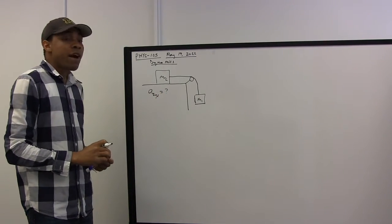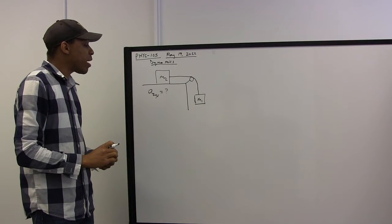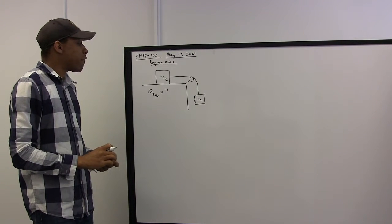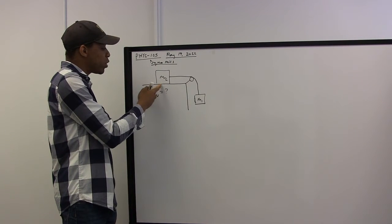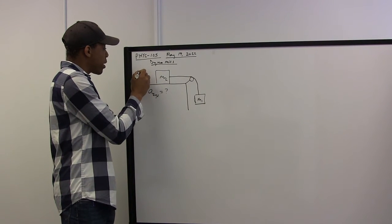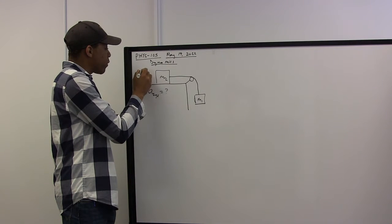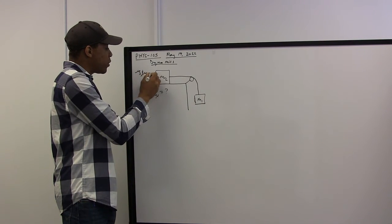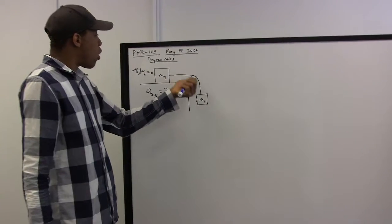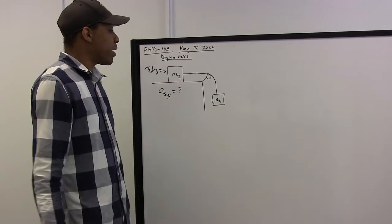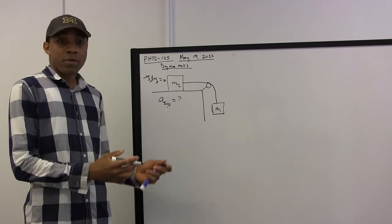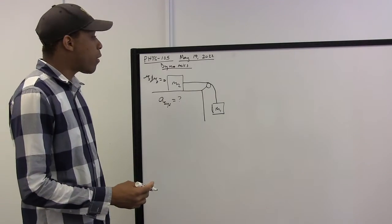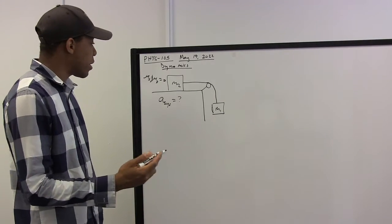We have to make a couple of simplifying assumptions to solve this problem. First, we're going to say there's no friction between mass m2 and the surface of the table, so the coefficient of sliding and coefficient of static friction are both zero. We're going to say the cord is weightless and there's no friction in the pulley system. With these assumptions, we proceed with the solution or calculation of the acceleration of the system.